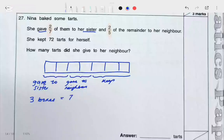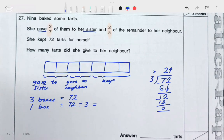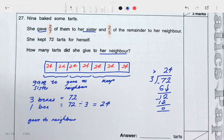Our goal is to find the number of tarts in 1 box. If 3 boxes equal 72 tarts, then 1 box equals 72 divided by 3, which is equal to 24. Each box contains 24 tarts. But the question is how many tarts did she give to her neighbor? She gave 2 parts to her neighbor, so if 1 box contains 24 tarts, then 2 boxes equals 24 plus 24, which equals 48 tarts.